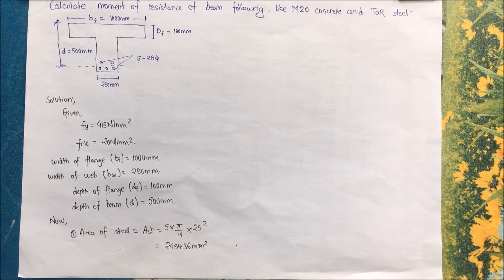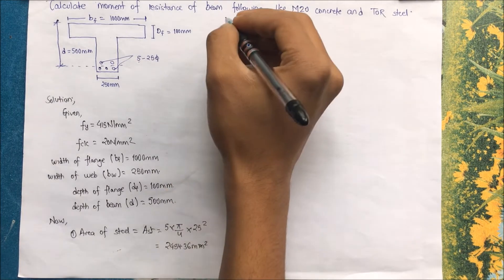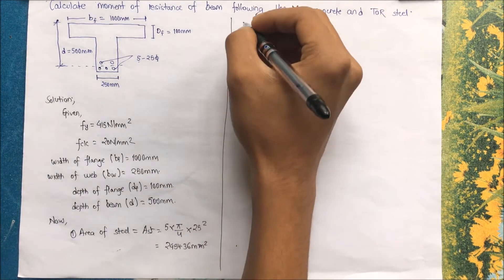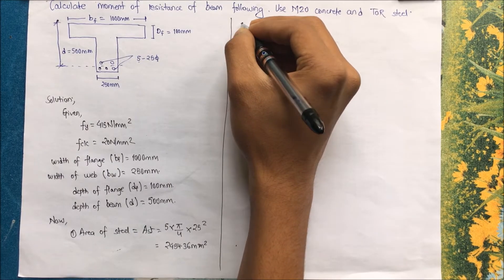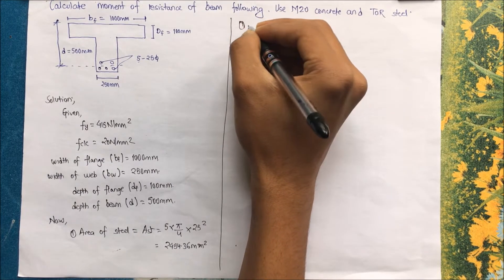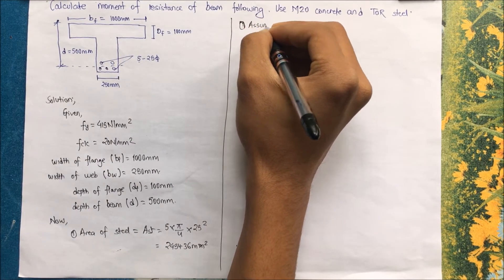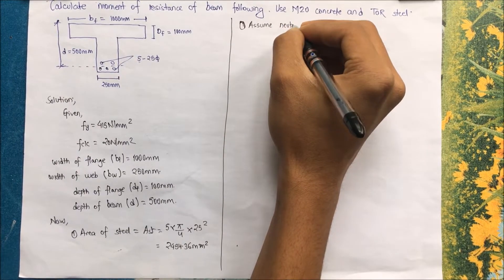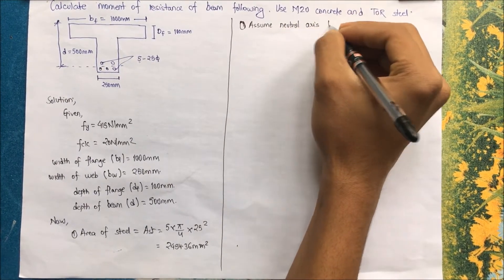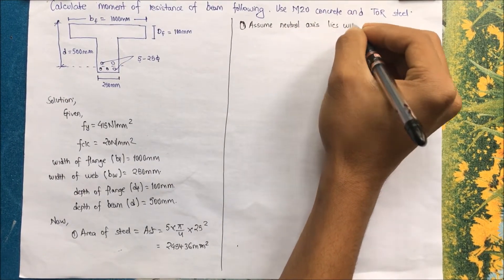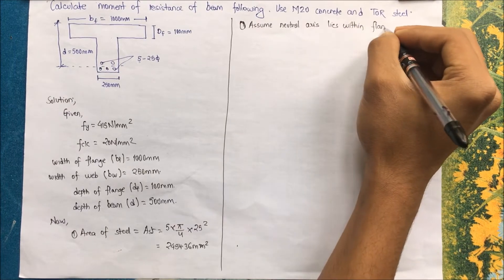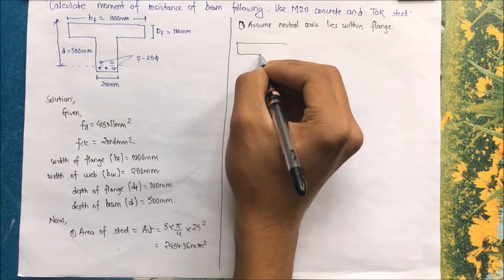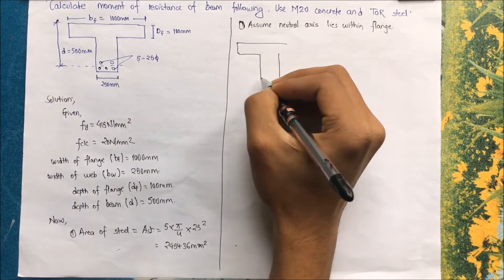We need to understand three cases. The basic difference between a normal beam and a flanged beam is that we must identify whether the neutral axis lies within the flange or outside the flange. The first assumption we make is that the neutral axis lies within the flange.